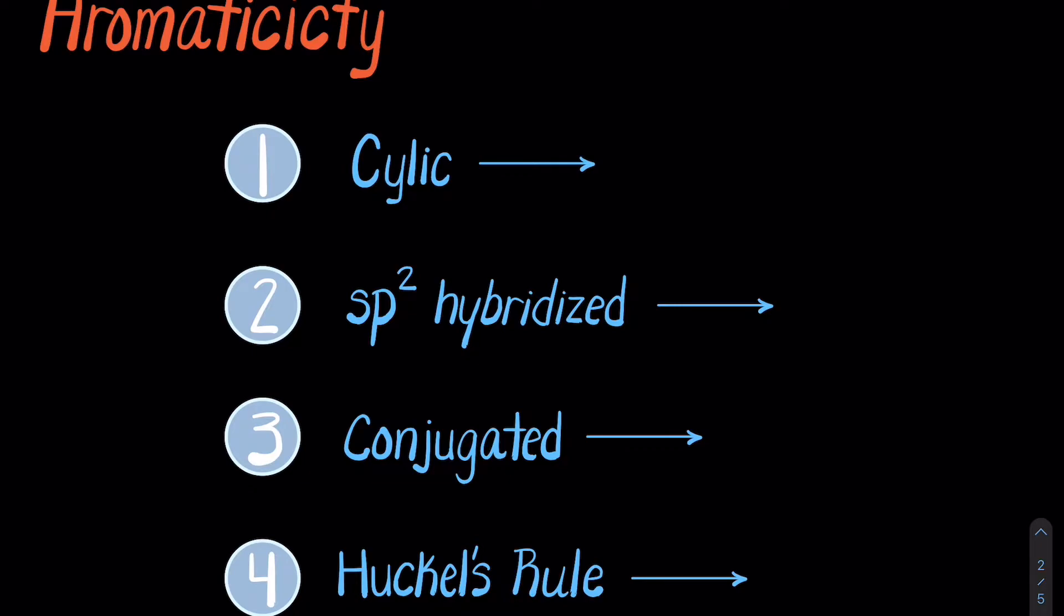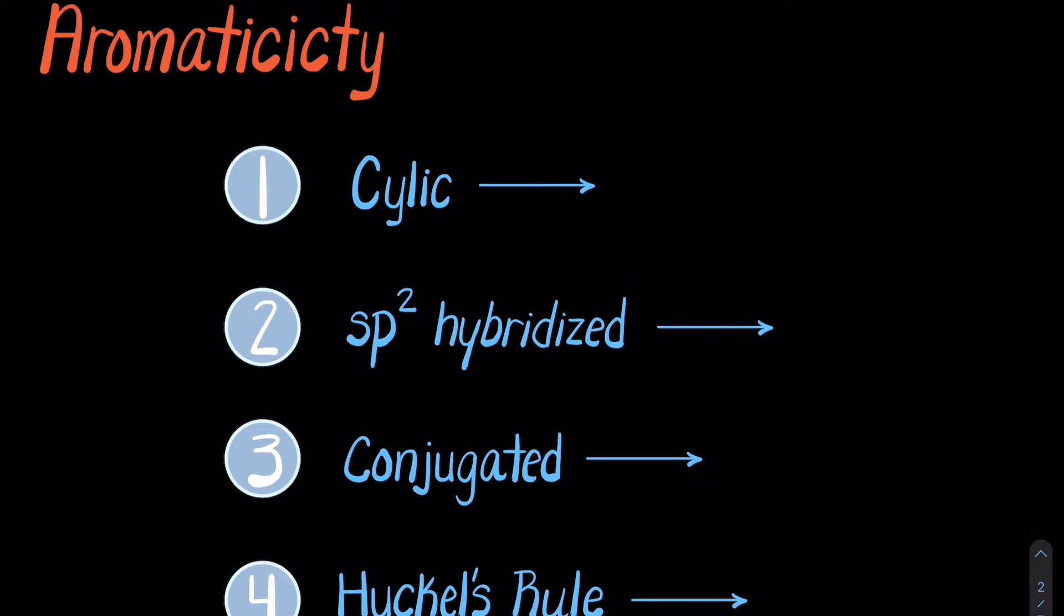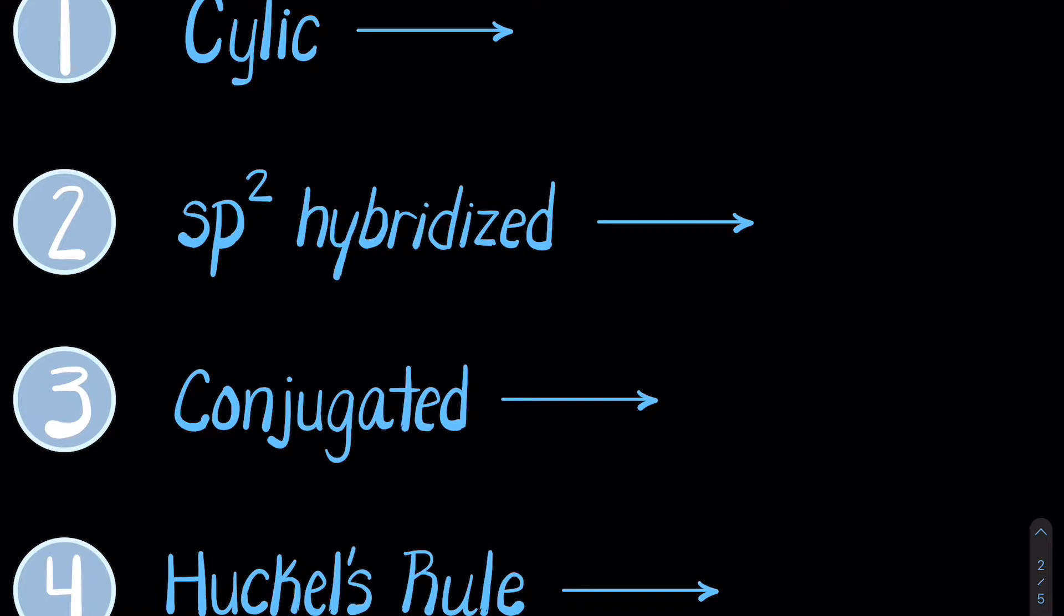So what makes something aromatic? An aromatic compound requires four different things, all must be met. The first being cyclic—this means the first carbon in the chain must be bonded to the last carbon in the chain. The second thing that makes something aromatic is sp2 hybridized, meaning the molecule must exhibit planar geometry.